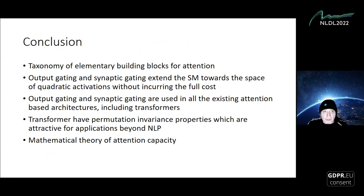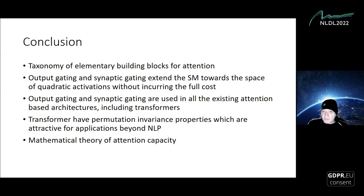In conclusion, I've tried to show that it's possible to produce a taxonomy of attention and identify fundamental basic mechanisms: the interesting ones are output gating and synaptic gating, which are outside the standard model and extend it towards quadratic activations. Both are the fundamental building blocks of transformer architectures, which are very useful for NLP problems. And because of their permutation invariance property, they are also very good for other problems, for instance in physics and chemistry. I've also given you a sense of how to begin building a more precise mathematical theory of attention using capacity. Thank you very much.